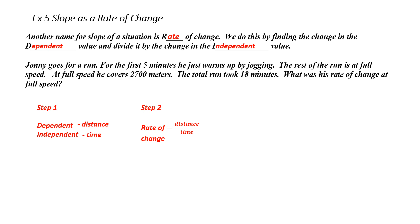At this point, I'm ready to substitute in my values. How far did he run at full speed? 2700 meters. How long did he run at full speed? Well, the total run took 18 minutes, but 5 of those minutes were jogging. So, I'm going to have to subtract 18 and 5, and that's going to mean his total time running at full speed was 13. This winds up giving me a rate of change of 208 meters per minute.